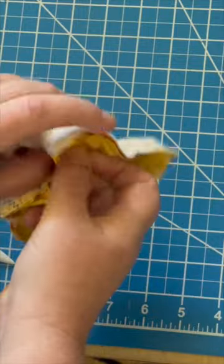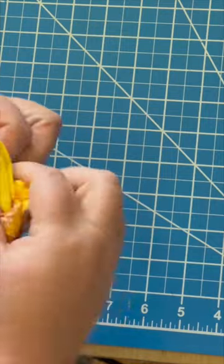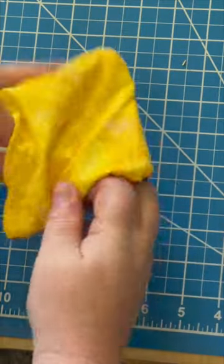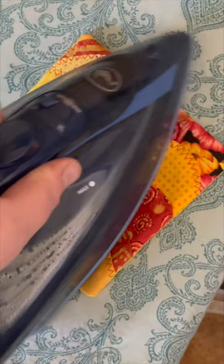Then I cut off my corners and turned it inside out. I used a point turner to poke out the corners, then rolled the seams between my finger and thumb and pressed it. Then I closed up the opening either with edge stitching or using a ladder stitch.